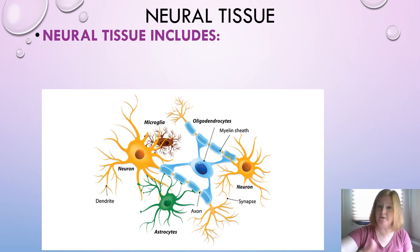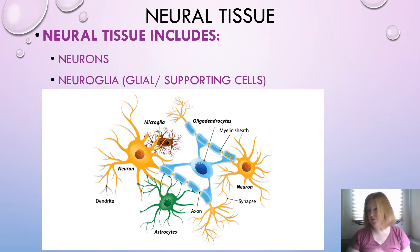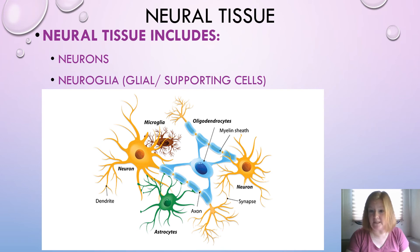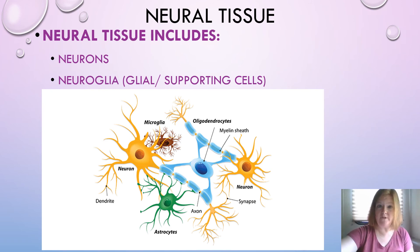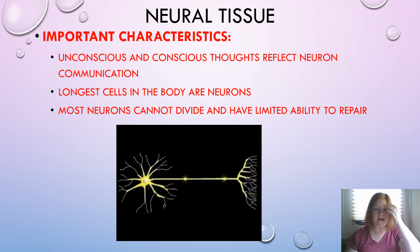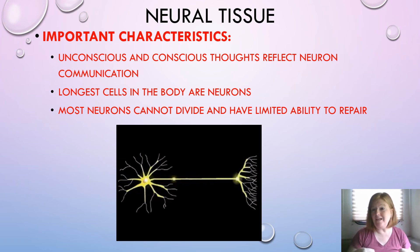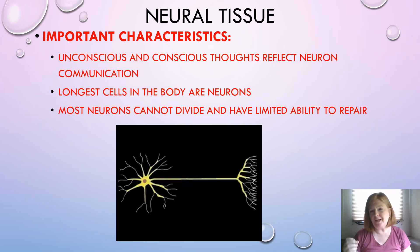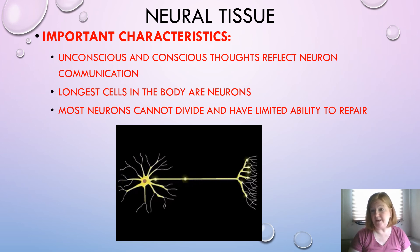The last type of tissue is neural tissue, or nervous tissue. It includes neurons — the functional unit of neural tissue — and neuroglia, or glial cells, which are supporting cells. Our unconscious and conscious thoughts reflect neuron communication, so anything happening in our body indicates that neurons are communicating. The longest cells in our body are neurons. Most neurons cannot divide and have limited ability to repair, meaning if nerves are damaged that damage can be permanent — which is why spinal cord damage can result in paralysis.